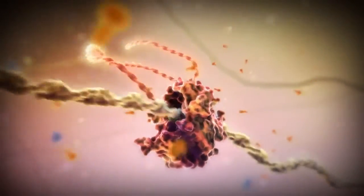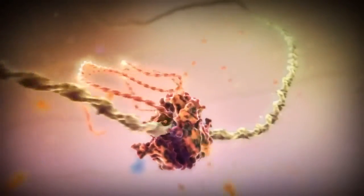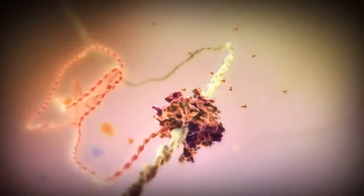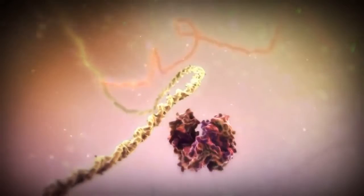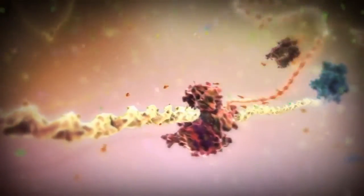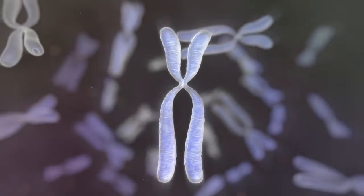Encoded within the structure of DNA is the information necessary for building every protein required for cellular function. In this case, the protein instructions being copied are for a protein which functions during cell division. Once the necessary proteins are produced, the cell is able to divide.